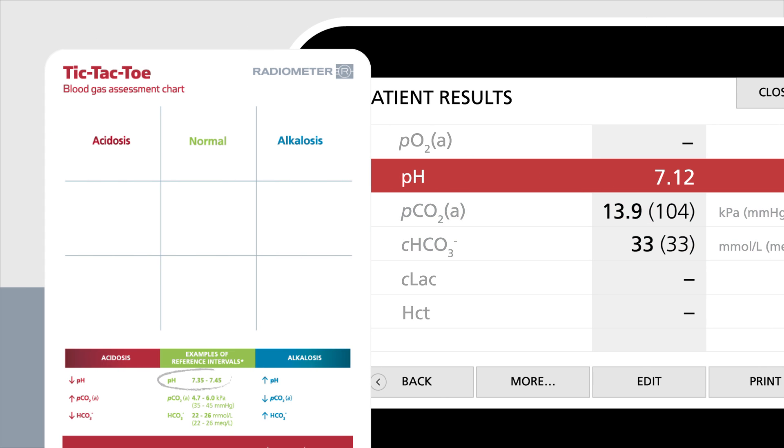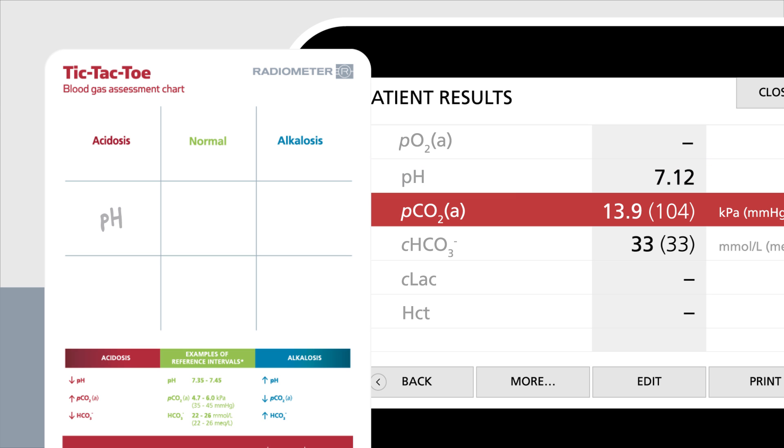Looking at the reference interval for pH, we can conclude that the pH is below 7.35 and therefore goes into the acidosis column. Now, the patient results show pCO2 above 6.0 kPa. Looking at the reference interval, this means that pCO2 goes into the acidosis column as well.